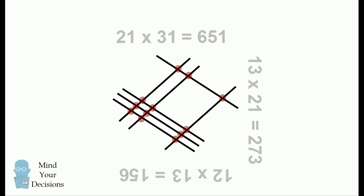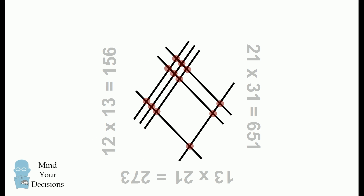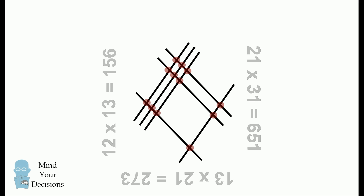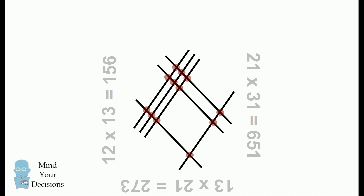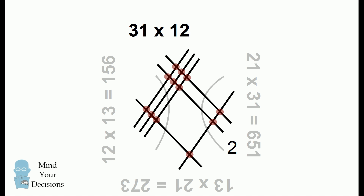We're not done yet. We can do this one more time — rotate the diagram 90 degrees. Now there's a pattern: each time you rotate the diagram, it turns out that you're going to switch the two numbers and switch the digits in the second number. The lines sloping up and to the right are three lines followed by one line, for 31. The lines sloping down and to the right are 1 followed by 2, which is 12. We now count up the intersections: 2 on the right, 7 in the center, and 3 on the left. So 31 times 12 is 372.